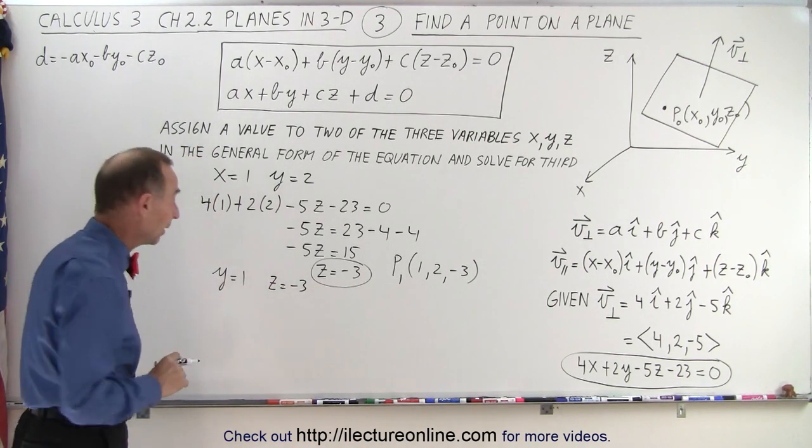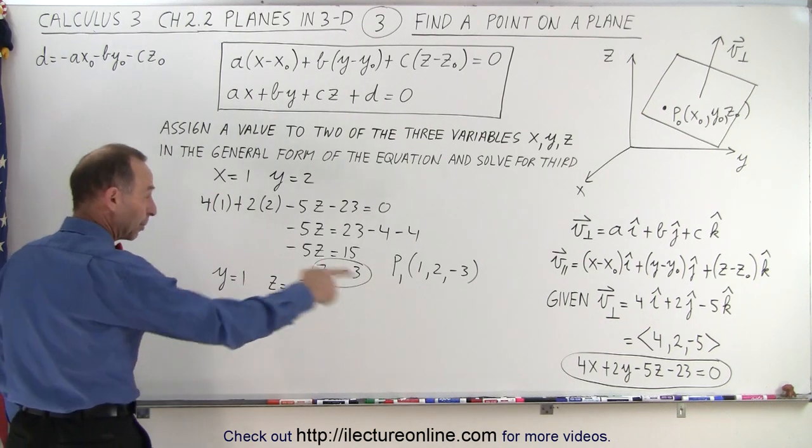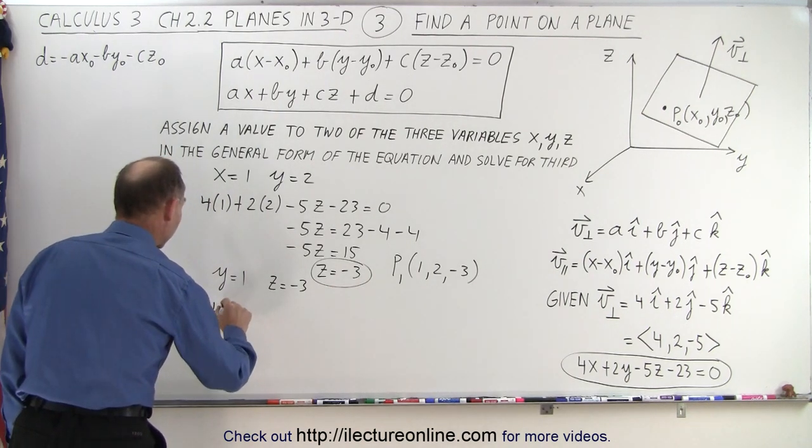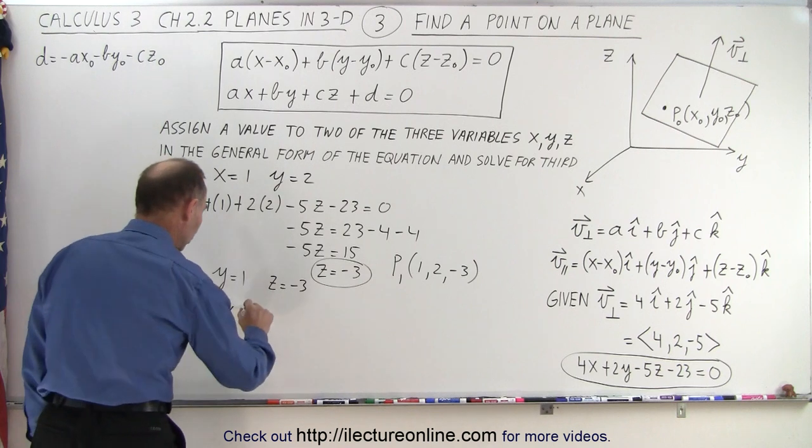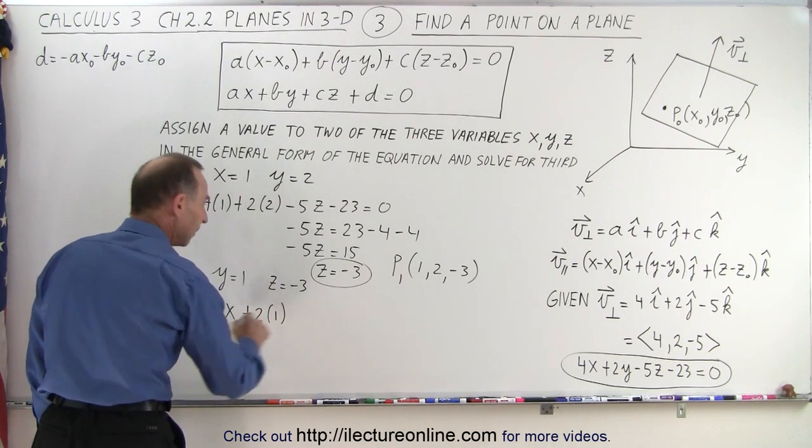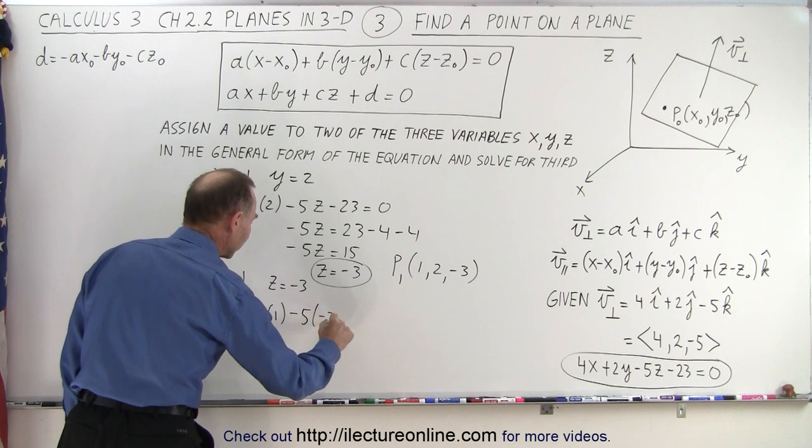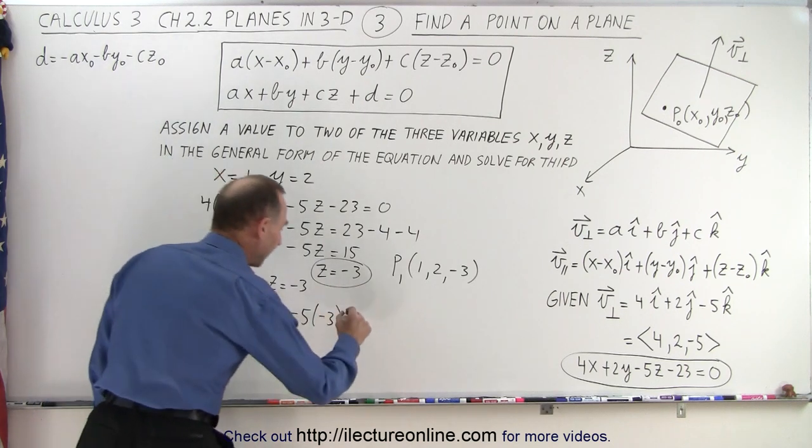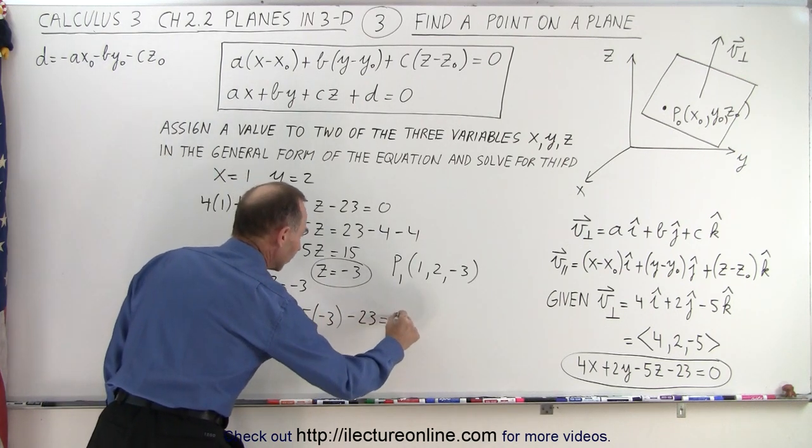Okay, let's see what that comes out to. So again, we plug that into the equation. So we get 4x plus 2 times y, that's 2 times 1, minus 5 times the minus 3, minus 23 is equal to 0.